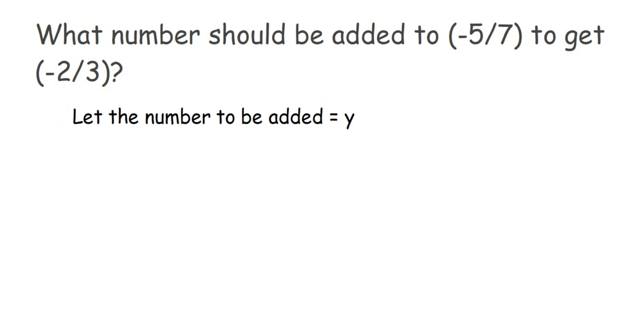-5/7 + y = -2/3. Now we have to find the y value. Transpose -5/7 to the other side of the equation, so the sign will change. y = -2/3 + 5/7.